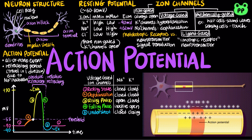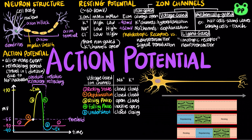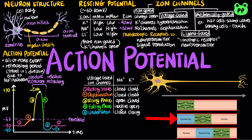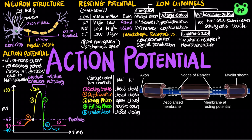An action potential can travel long distances by regenerating itself along an axon. At the site where an action potential is generated, usually the axon hillock, an electrical current depolarizes the neighboring region of the axon membrane. Inactivated sodium channels behind the zone of depolarization prevent the action potential from traveling backwards. Therefore, action potentials travel in one direction towards the synaptic terminal. For myelinated neurons, action potentials are formed only at nodes of Ranvier, which are gaps in the myelin sheath where voltage-gated sodium channels are found.